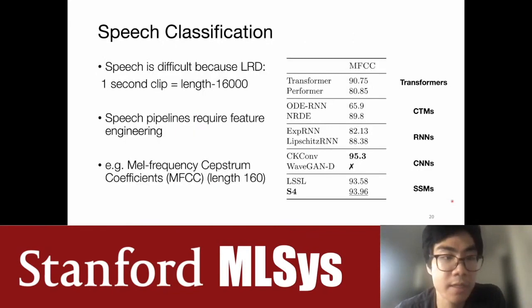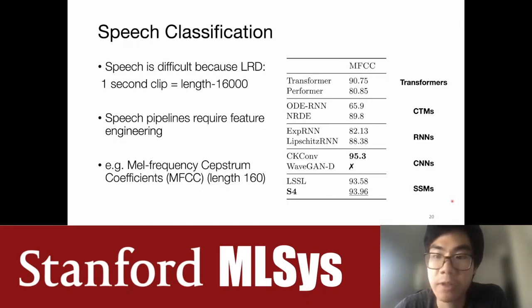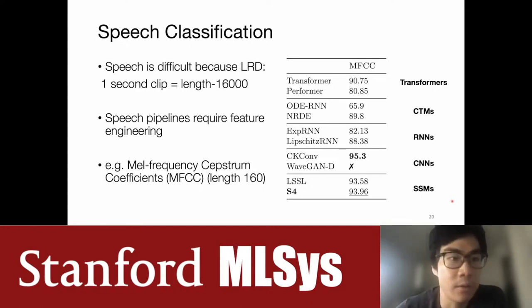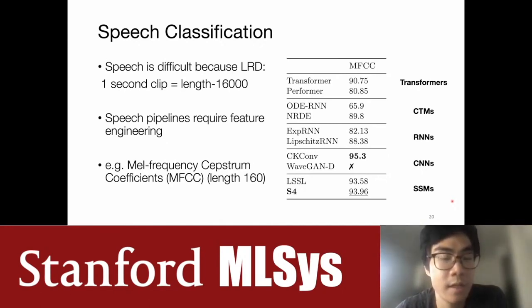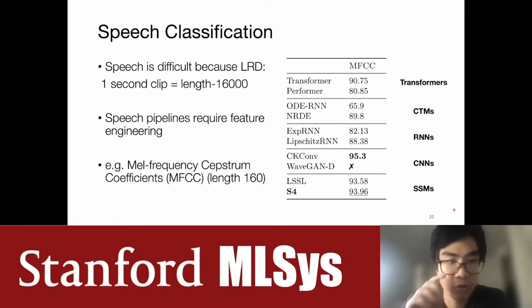For more realistic sequence and time series data, we tested on a speech classification task called keyword spotting on a dataset called Speech Commands, which consists of one-second audio clips that need to be classified into words. Speech is difficult because of the high sampling rate, which makes sequences incredibly long. With one-second clips, the sequences have length 16,000, which is far longer than most sequence models are designed to address. Usually speech pipelines require substantial feature engineering.